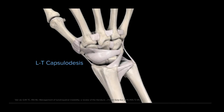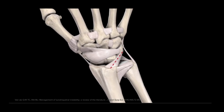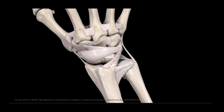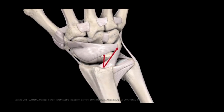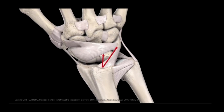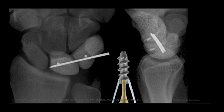Dorsal capsulodesis can be performed to augment the LT ligament using an extrinsic ligament, most commonly the dorsal radiocarpal ligament. The dorsal radiocarpal ligament is split into two limbs, preserving their proximal attachment to the distal radius. Each half is then advanced and secured into the dorsal lunate and dorsal triquetrum. The ligamentous advancement is secured on the lunate and triquetrum with nano-corkscrew anchors and supplemented with Kirschner percutaneous fixation of the LT joint.